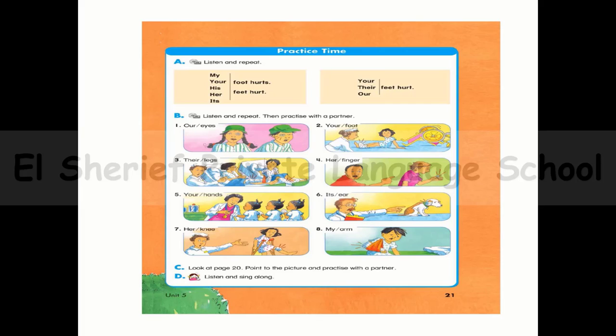Possessive adjectives mean something belongs to someone. For example: my, your, his, her, its foot hurts. Or your, their, our foot hurts.